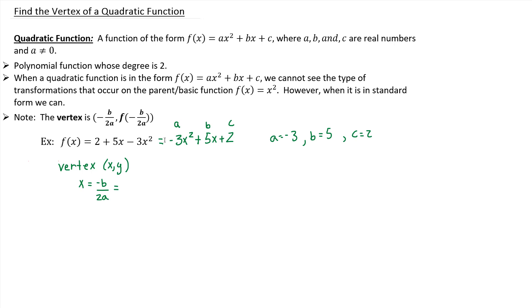Well, b is 5, so the opposite of 5 is negative 5. And then 2 times a is just 2 times negative 3. So you get negative 5 divided by negative 6. A negative divided by a negative is a positive, so it's a positive 5 sixths. So that's your x value of your vertex.